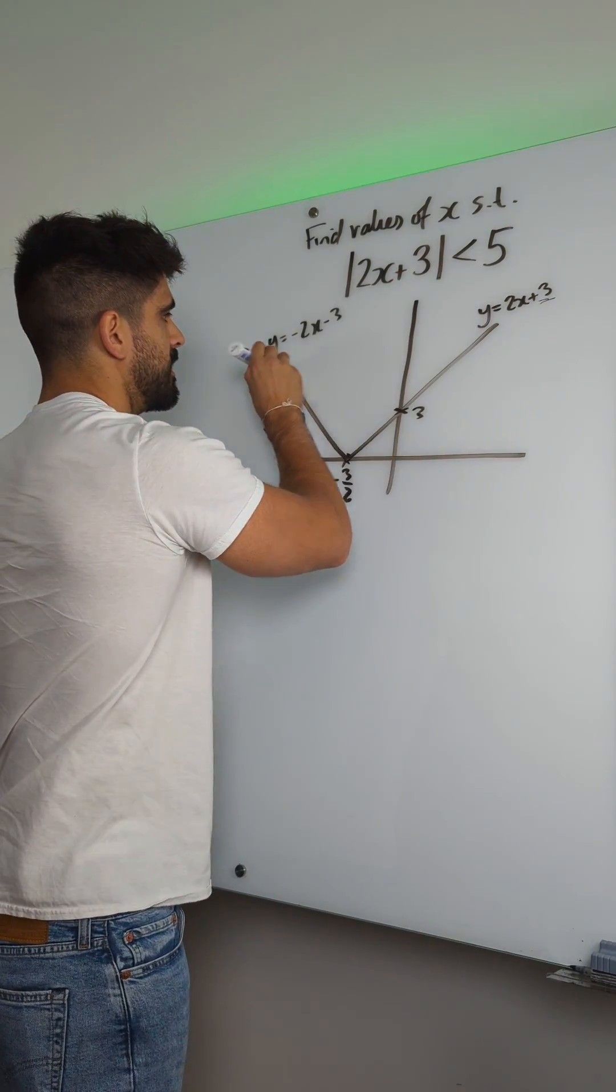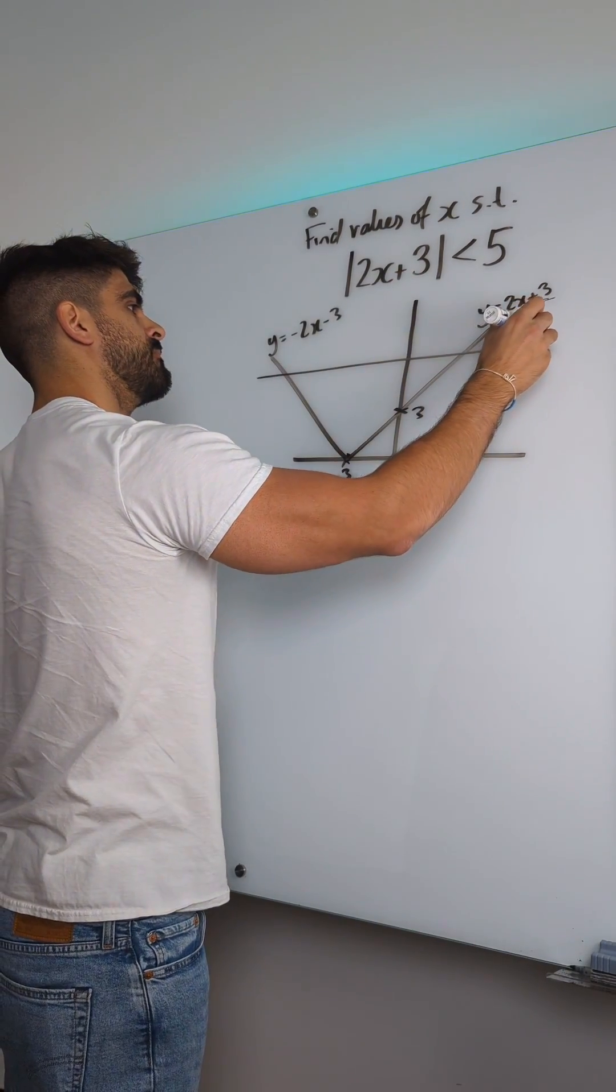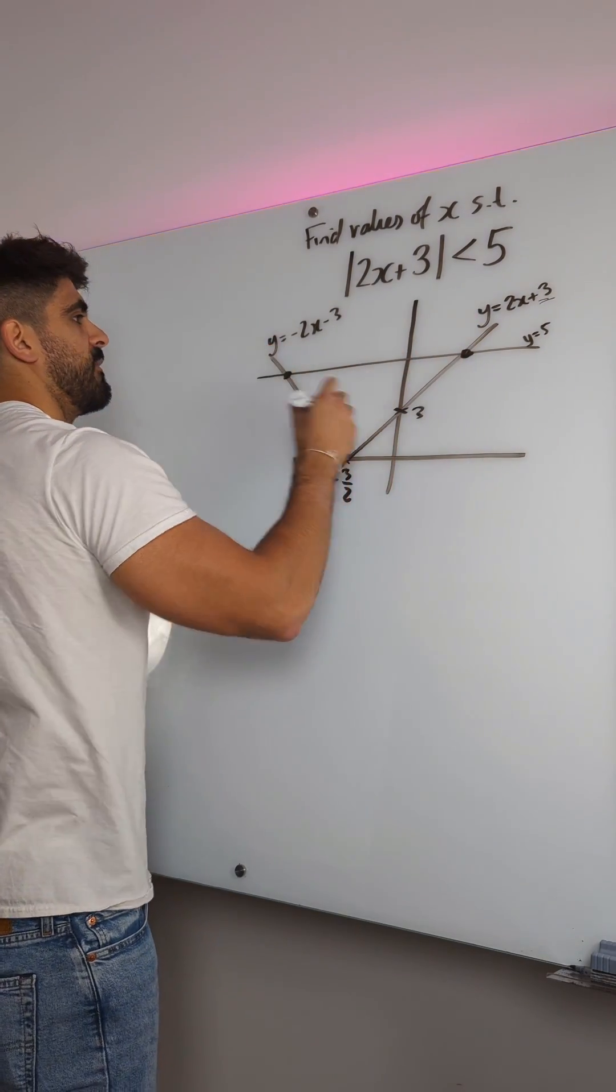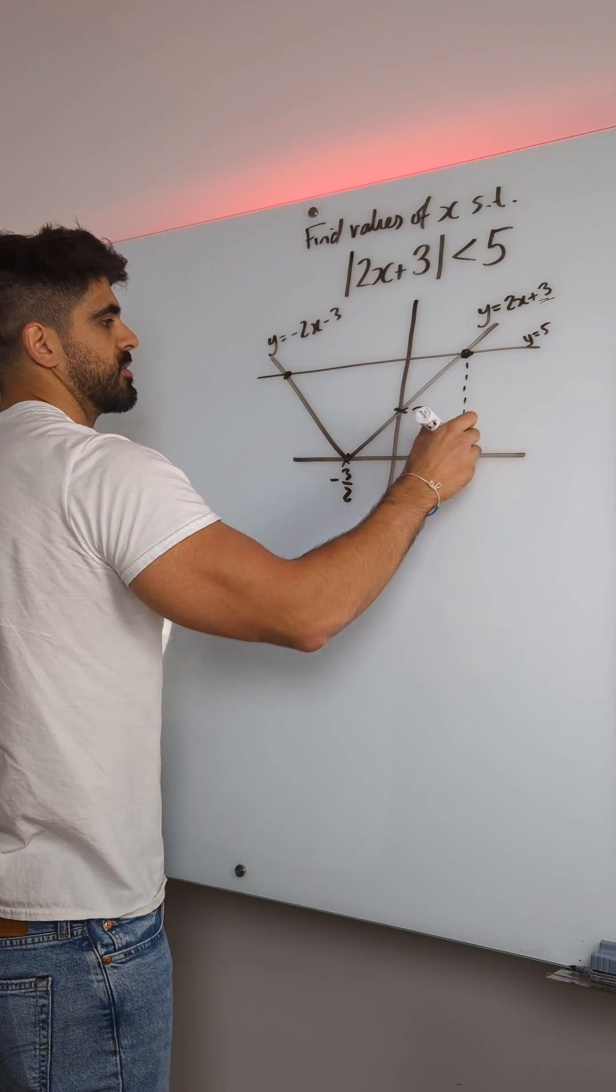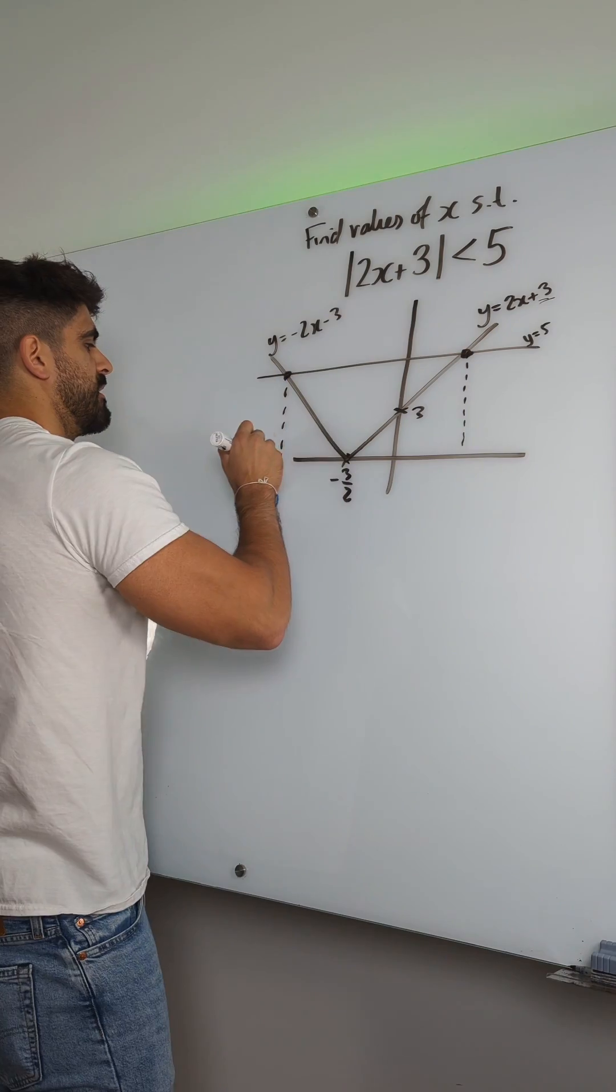And then five is over here. So what we need to do first is find the x-values of where these two graphs meet.